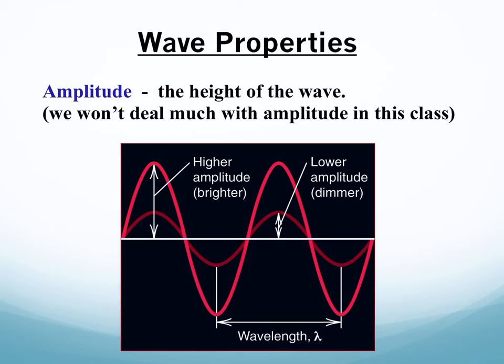Another wave property is amplitude — the height of the wave. We don't deal with it much in this class. A higher amplitude means a brighter light; a lower amplitude means a dimmer light. We're not caring about brightness — we care about wavelength (the distance between crests) and frequency. Amplitude is its own thing we'll leave to the people in physics.